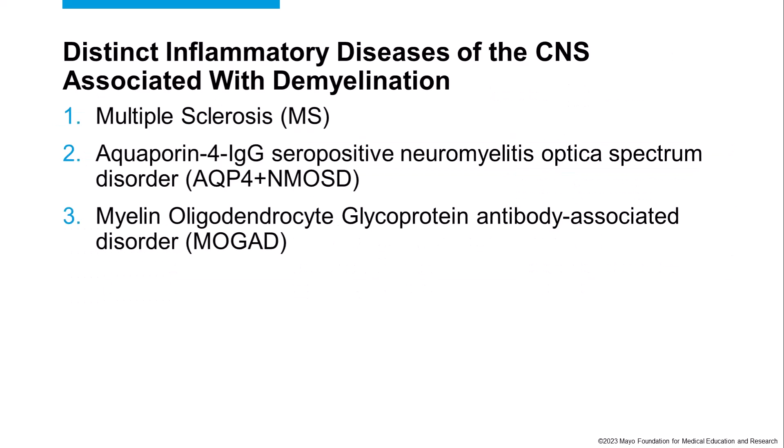When we think about inflammatory diseases of the central nervous system associated with demyelination, there are three major ones. We have multiple sclerosis, which ranges from radiologically isolated syndrome all the way to secondary progressive MS. We have aquaporin-4 antibody-positive neuromyelitis optica spectrum disorder, which was the first antibody discovered as a biomarker of CNS demyelination. And today we're going to focus on the third well-defined disease, which is myelin oligodendrocyte glycoprotein antibody-associated disease, or MOGAD.